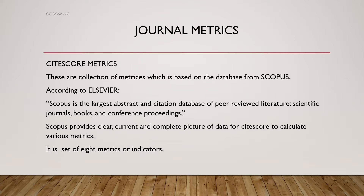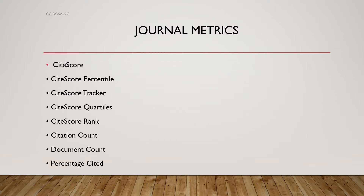CiteScore metrics are a collection of metrics based on the database from Scopus. According to its description, Scopus is the largest abstract and citation database of peer-reviewed literature, scientific journals, books, and conference proceedings. It is a community of thousands of researchers from all over the world, and its database is considered most relevant. Scopus provides a clear, current, and complete picture of data. For CiteScore, there are eight metrics or indexes: CiteScore percentile, CiteScore tracker, CiteScore quartile, CiteScore rank, citation count, document count, and percentage cited.